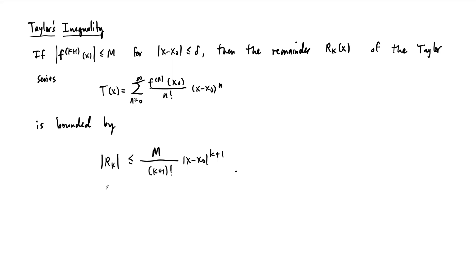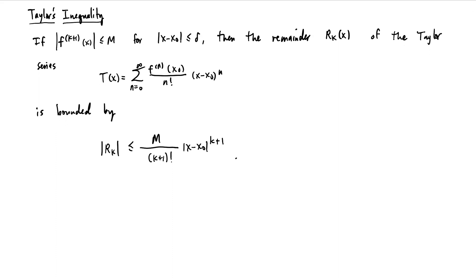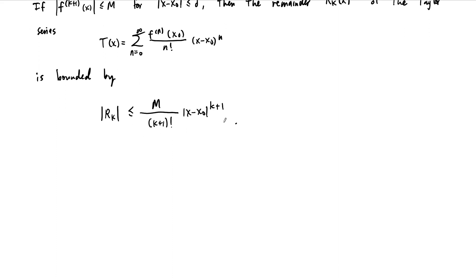In this video, I'd like to prove at least the first step of the Taylor Remainder Theorem, also known as Taylor's Inequality. This theorem tells us that if we have a function f of x and its Taylor series t of x centered at x naught, then the remainder in the k-th partial sum is bounded by this inequality right here.